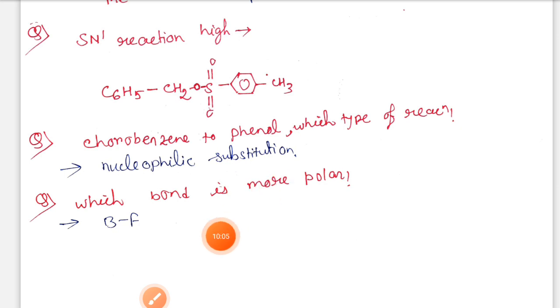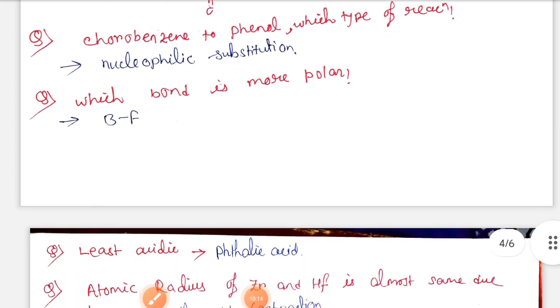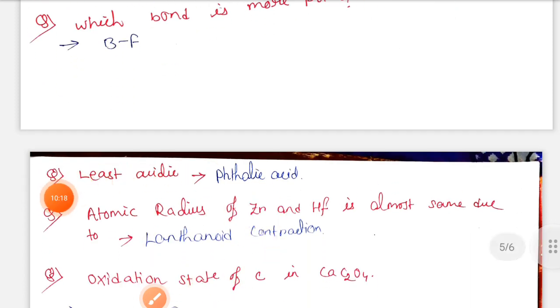Chlorobenzene to phenol - what type of reaction? Nucleophilic substitution reaction. Which bond is more polar? That is BF. The options are CO bond and three others, but this is the answer. Least acidic - here the option is phthalic acid. Four options are oxalic acid, picric acid, and phthalic acid. The answer is phthalic acid.